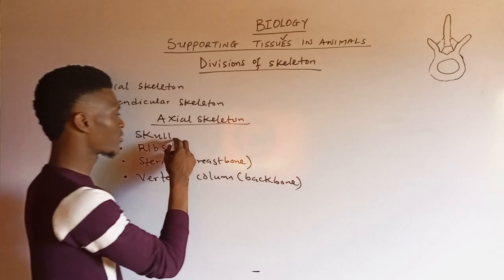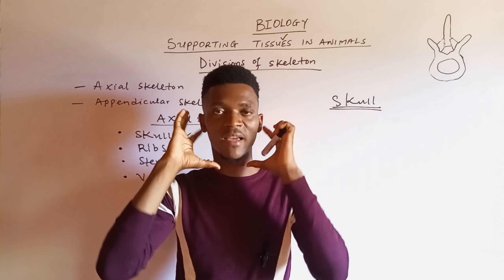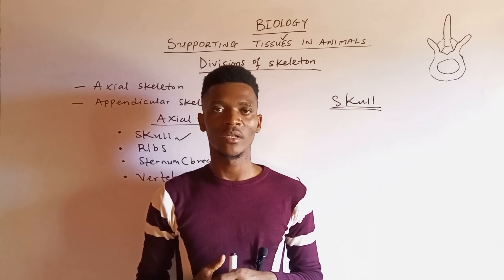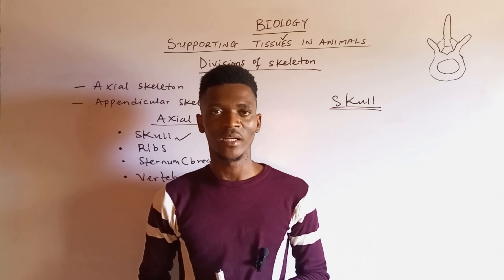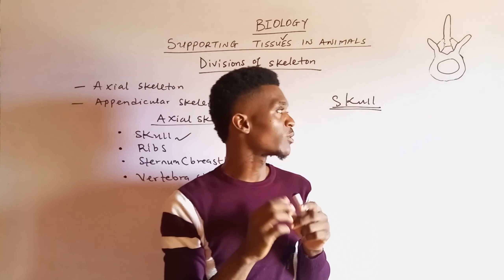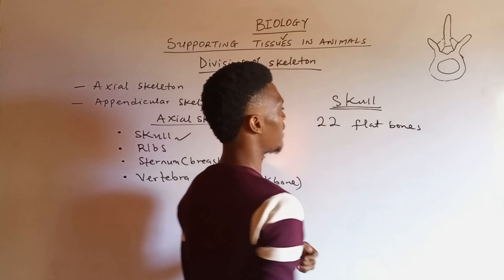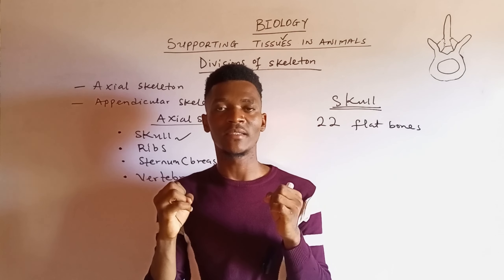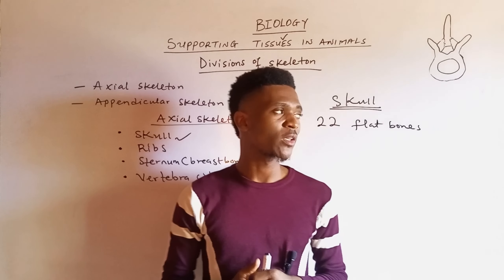Looking at the skull: many persons believe that when we say skull it only means the face, but it's every part above your neck that is considered to be the skull. The skull is divided into two main regions: the cranium, which is also called the brain box or brain case, and the facial bones. The total number of bones in the skull are 22 flat bones, connected by suture joints, which are immovable joints.